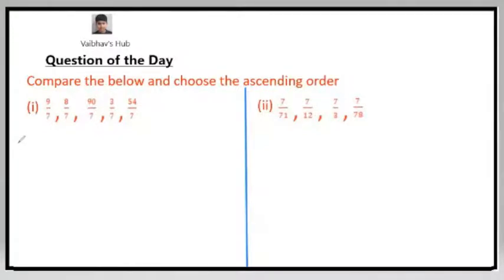3 by 7 is the smallest numerator, so 3 by 7 will be first. Then will come 8 by 7. Then we will have 9 by 7 as the third fraction. The fourth fraction will be 54 by 7.